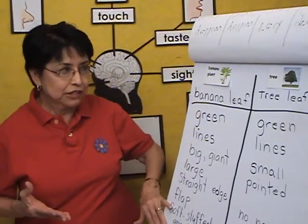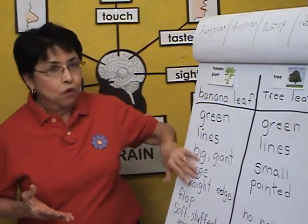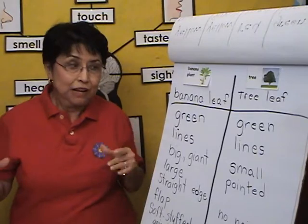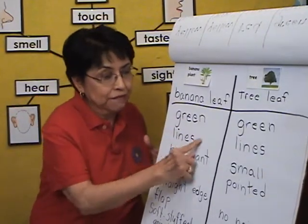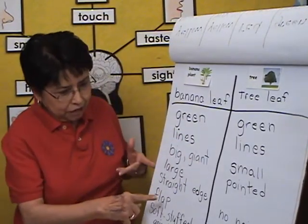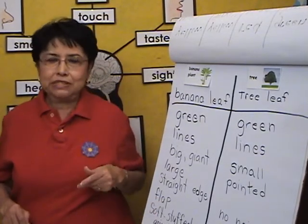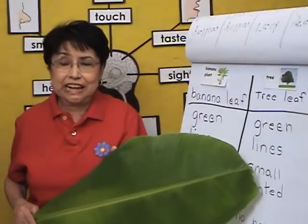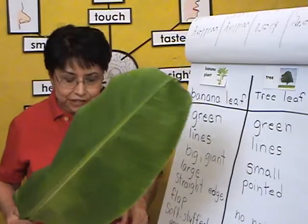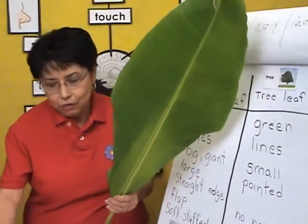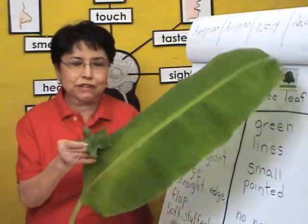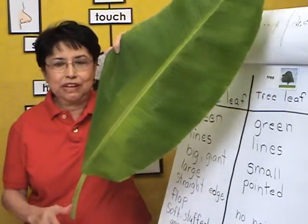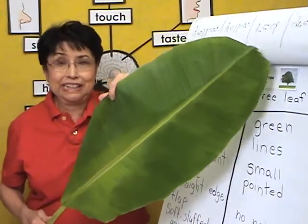After we finish, we'll say: what is the big difference between a banana leaf and a tree leaf? The size. Because they're both green and they both have lines — which are veins. One makes noise, one doesn't. But the biggest difference is that one is huge and one is small. Look at the huge difference between them. Yet this plant is what gives us bananas.